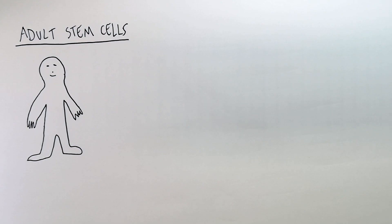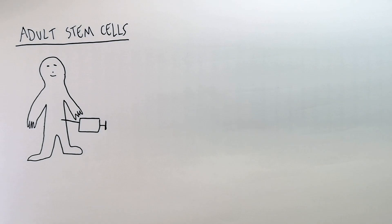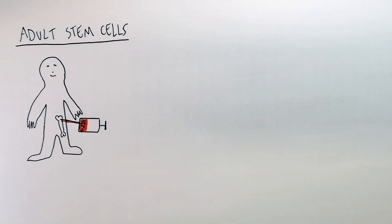Stem cells can now be used to repair damaged tissues by replacing the damaged cells. The first thing you do is insert a syringe into the bone marrow of the patient and extract the blood from the bone marrow.